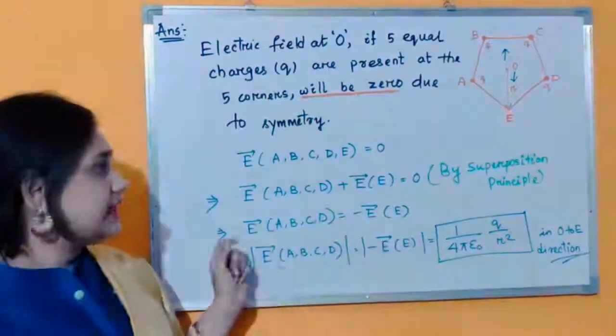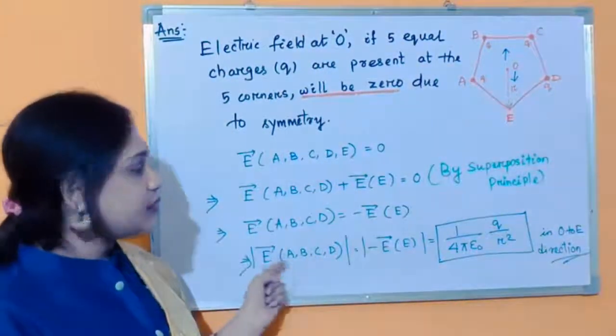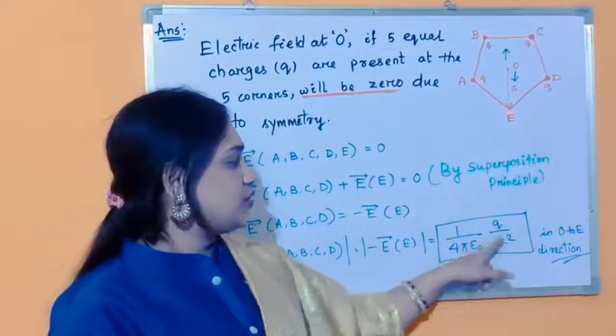So it is in the downward direction and the relation is from O to E. So final answer is the electric field at O due to A, B, C, D is given by 1 by 4π epsilon 0 Q by R squared in O to E direction.